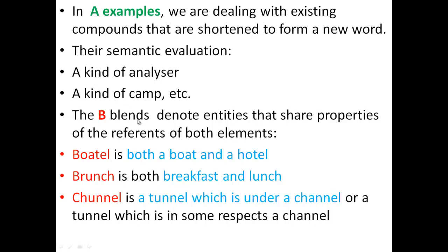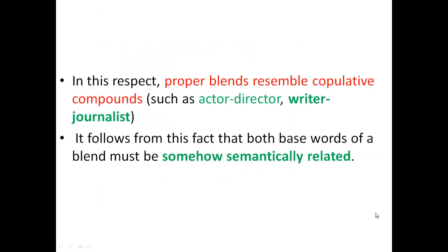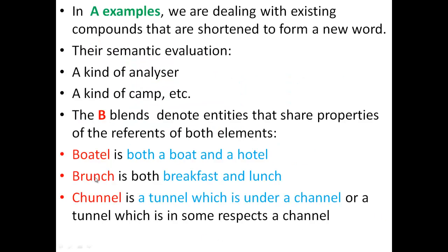The B blends denote entities that share properties of the referents of both elements. For example, bowtel: the first element is 'boat,' the second is 'hotel' — bowtel is both a boat and a hotel. Brunch is both breakfast and lunch, which means the meaning depends on the two base words composing the blend. Similarly, channel is a tunnel that is under a channel, or a tunnel which is in some respects a channel.